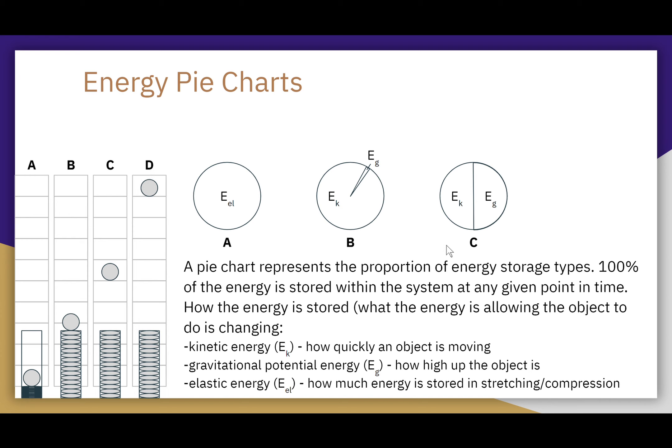At location D, the ball is at its maximum height, so gravitational potential energy is even greater. The spring is still in its relaxed state, so there's no elastic energy. Because the ball is launched straight up, at its maximum height its instantaneous velocity is zero — the object is not moving at all. So it has no kinetic energy and no elastic energy. It is 100% gravitational potential energy.